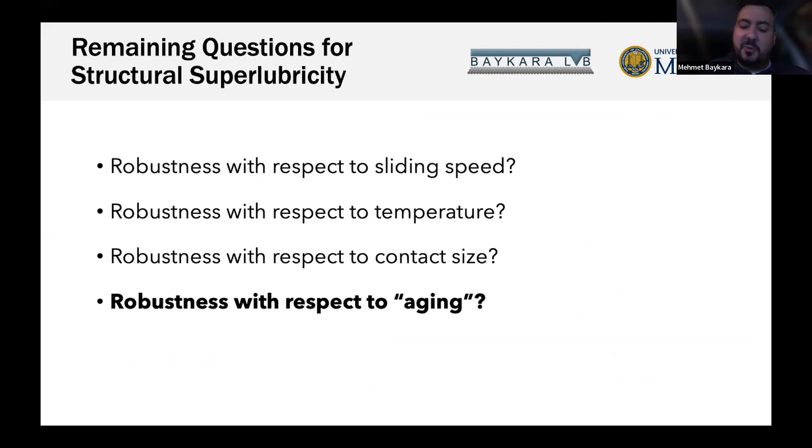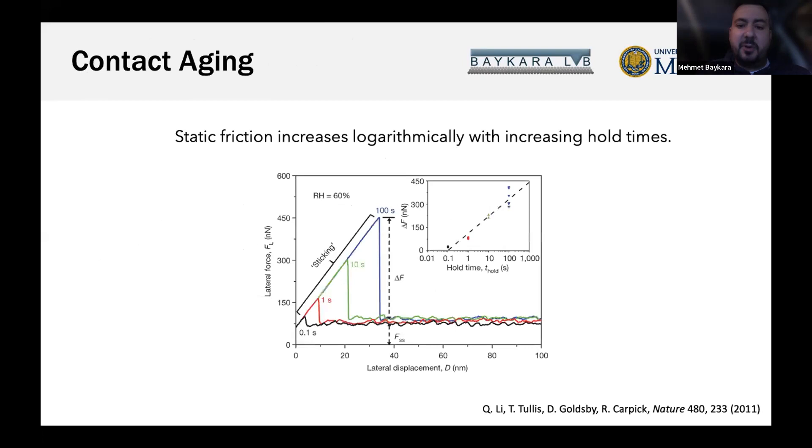However, many questions remain to realize holy grail applications. How does structural superlubricity behave with respect to sliding speed and temperature changes? Is there a contact size limit? And how does structural superlubricity stand the test of time - how does contact aging work for structurally superlubric contacts?